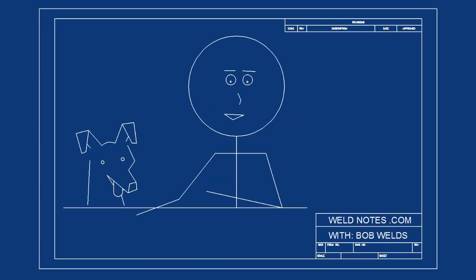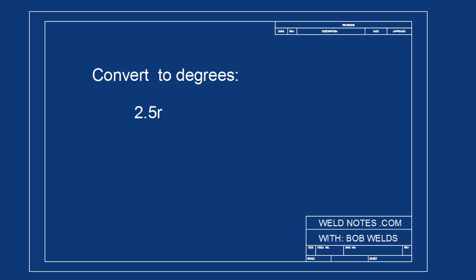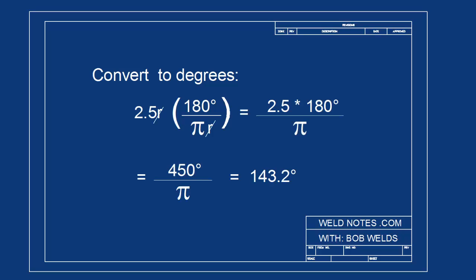Now, do you want to try converting radians to degrees? Okay, here's one. How many degrees is 2.5 radians? Pause the video and think about it. Okay, here's the answer. 143.2 degrees. See, I'll multiply 2.5 by 180 degrees over pi radians. The radians cancel out, and we're left with 143.2 degrees, give or take a few hundredths of a degree.